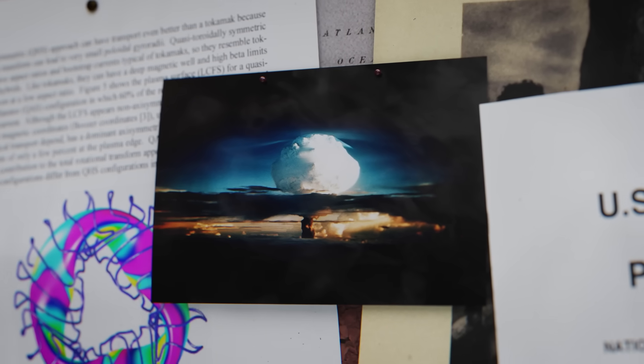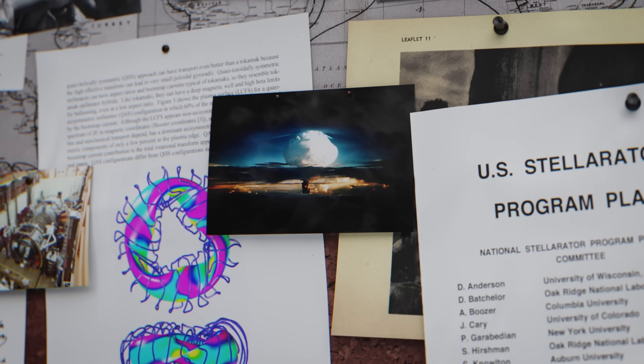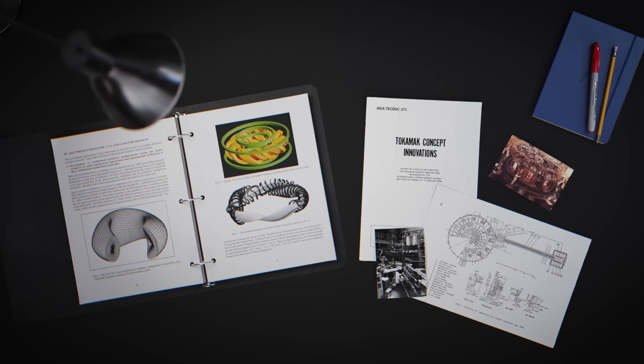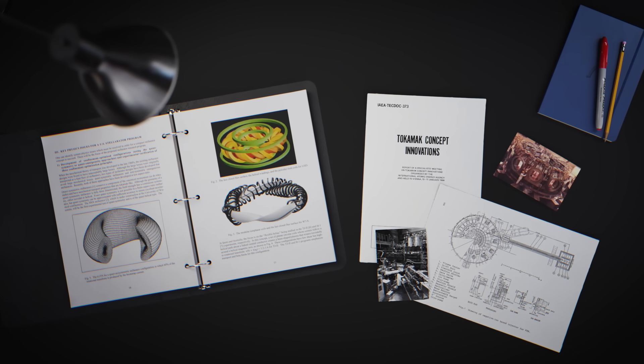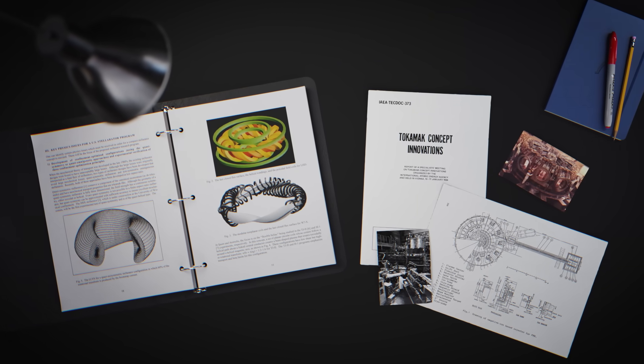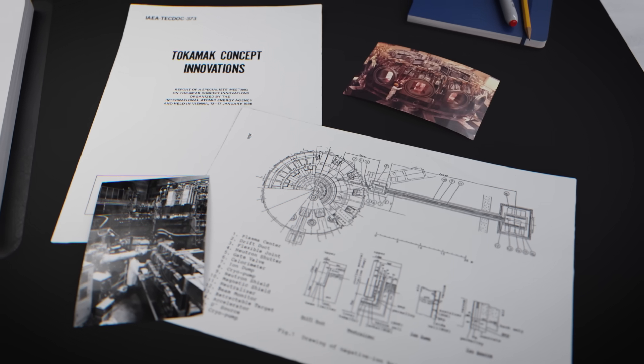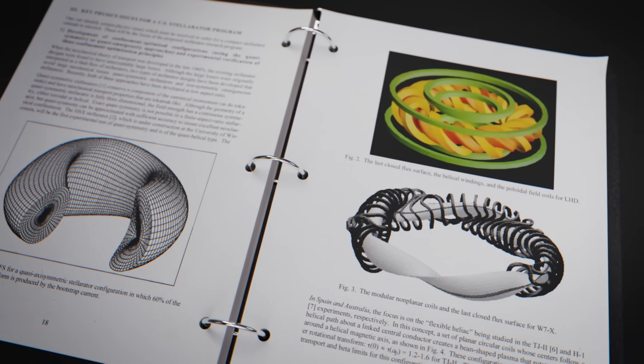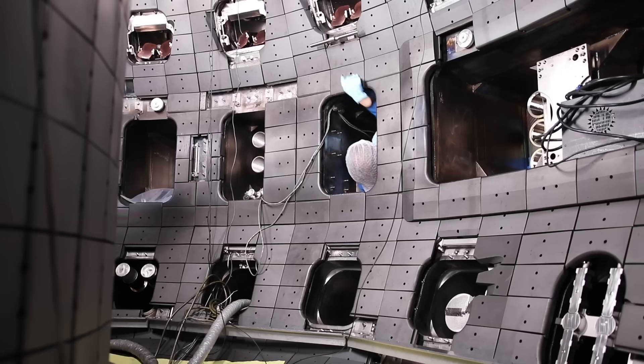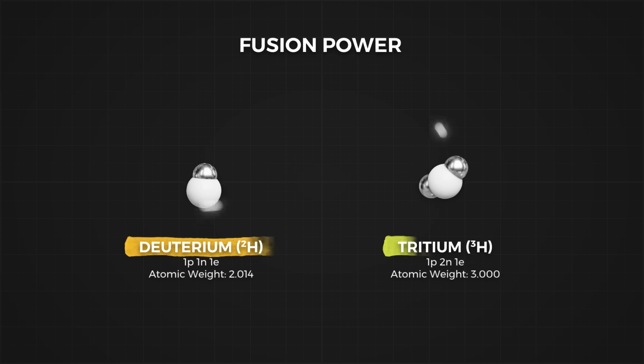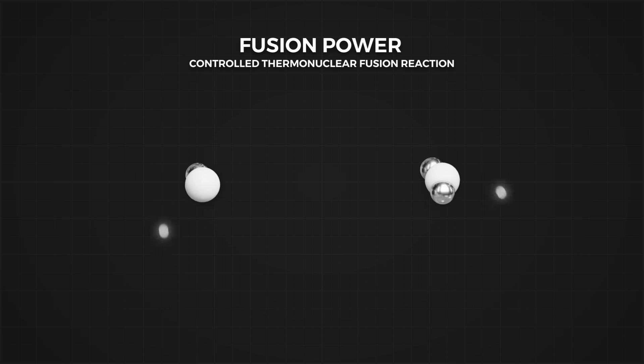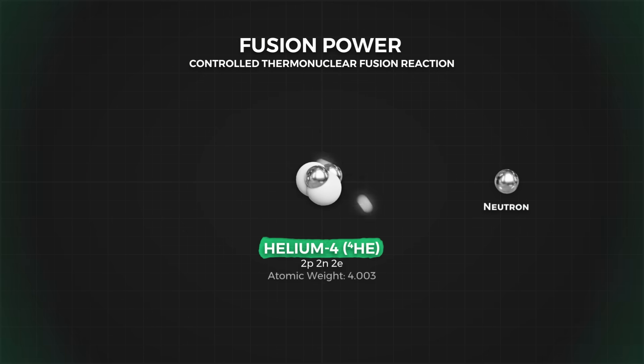Nuclear fusion experiments have been underway since the very earliest years of the Cold War, with the first generators firing up in the 1950s in both the USA and USSR. The Soviet Union approached the problem with the tokamak design, while the Americans used a slightly different approach, the stellarator. Each design attempts to solve the same problem. Fusion, in essence, isn't terribly complicated. We can make new elements by combining smaller elements, and in the process release a lot of energy.